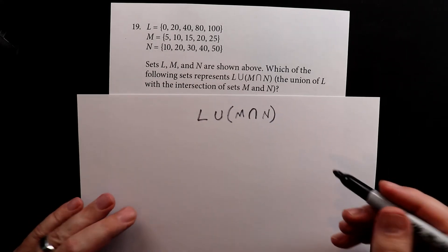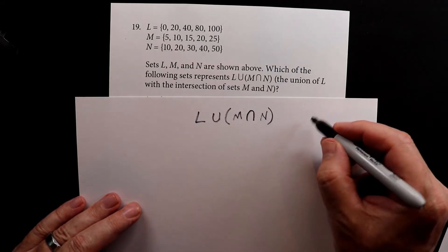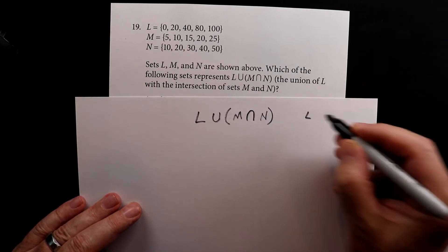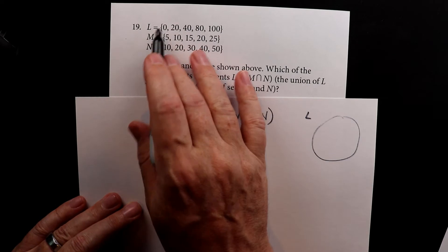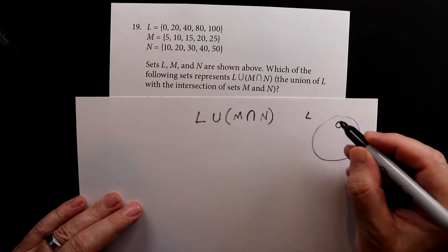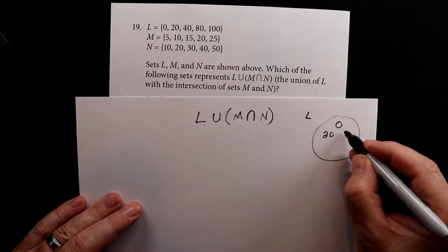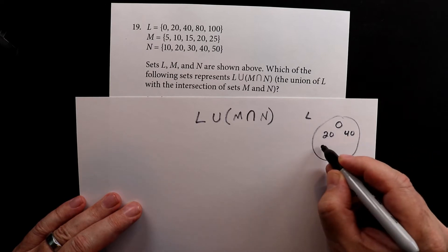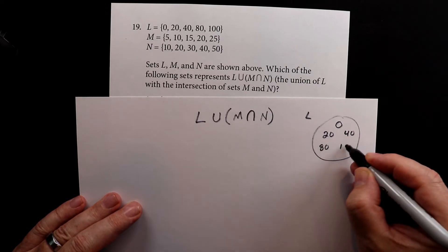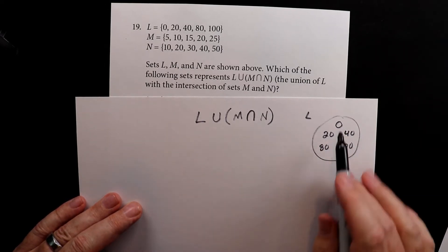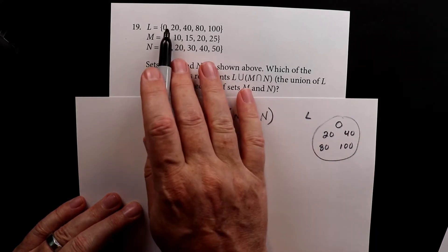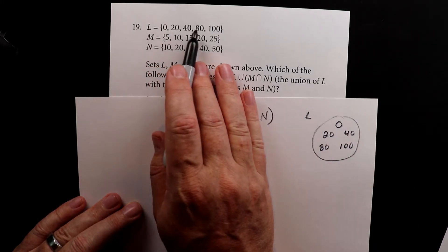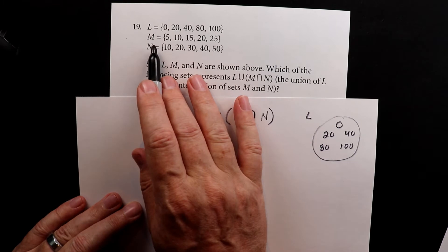So let's write these sets out just so you can show them. So inside of L we have 0, 20, 40, 80, and 100. So we have all five of those numbers: 0, 20, 40, 80, and 100. Set M.